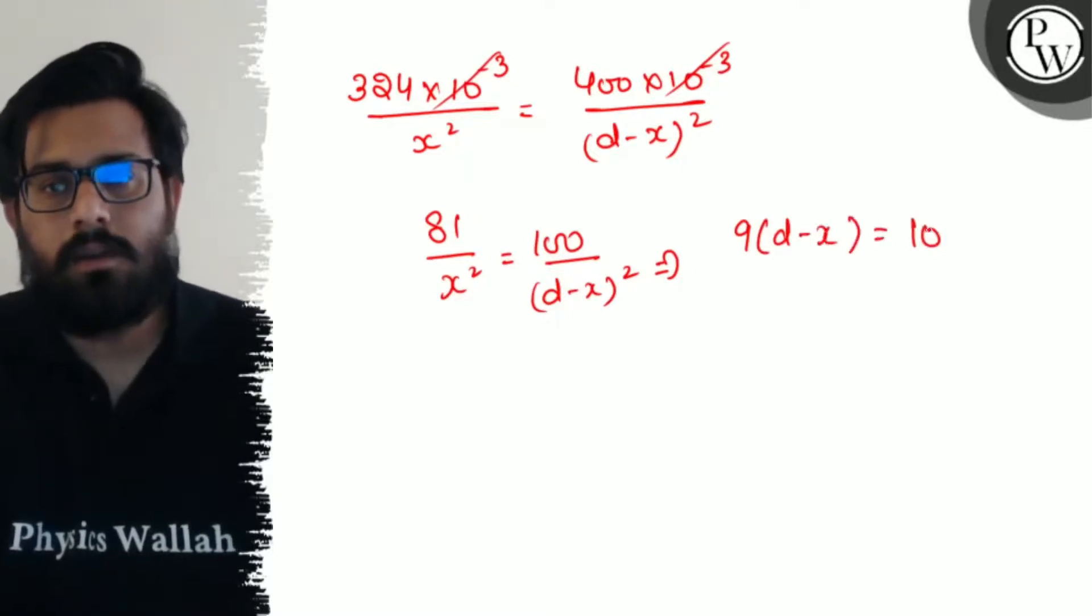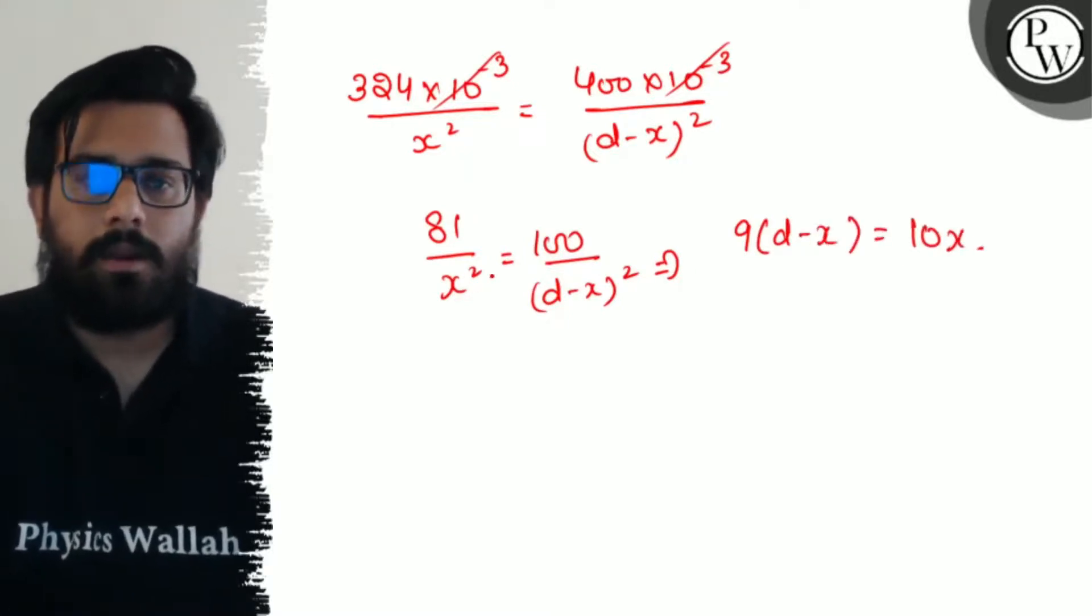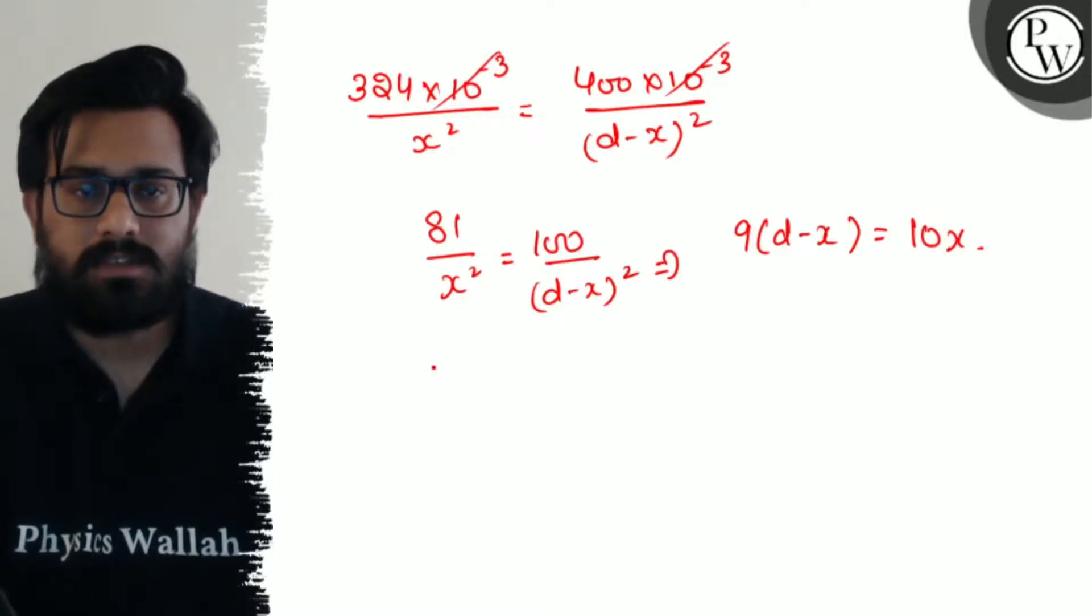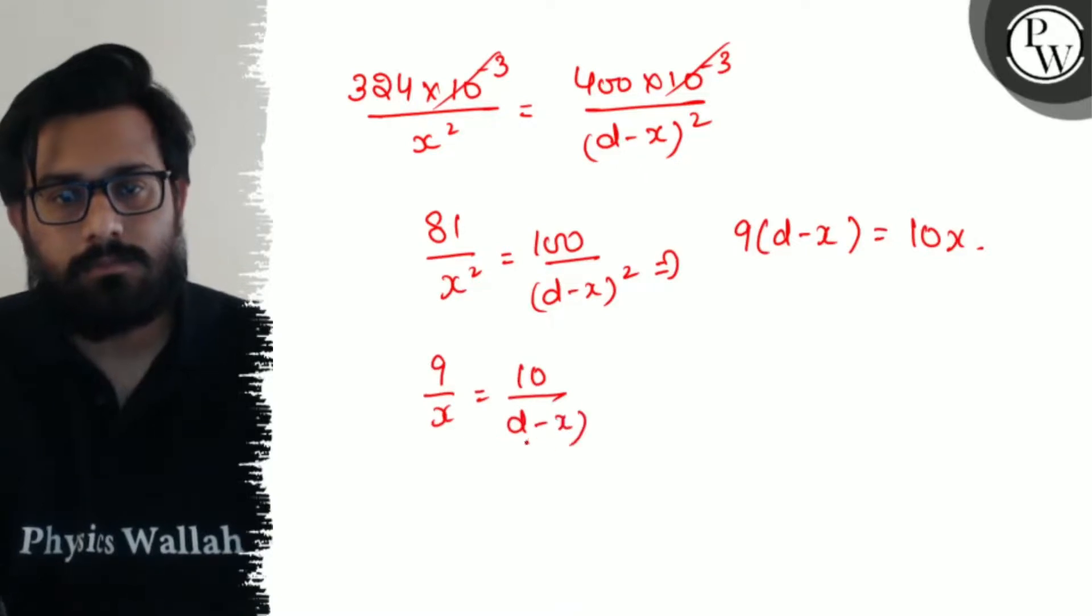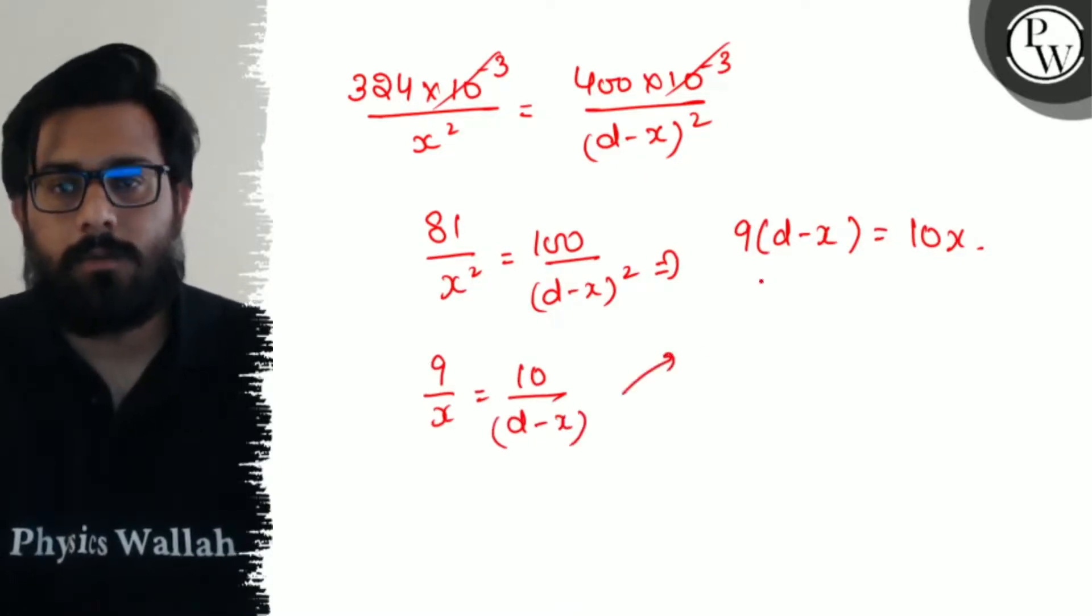Taking the square root, 9 upon x is equal to 10 upon d minus x.